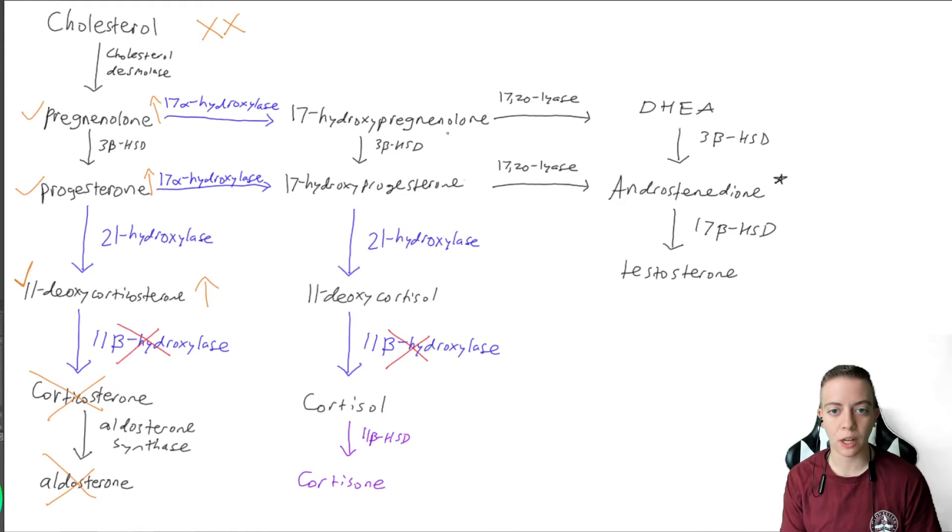We're going to produce 17-hydroxypregnenolone, 17-hydroxyprogesterone. 21-hydroxylase is functional, so we are going to produce 11-deoxycortisol. But once again, 11-beta-hydroxylase is not working. So can we make cortisol? No, we cannot. Can we make cortisone? Nope, can't do that.